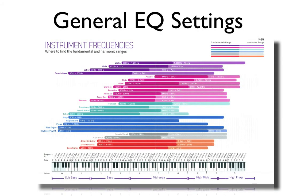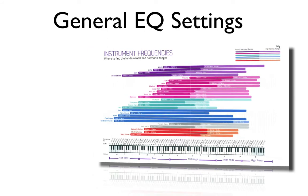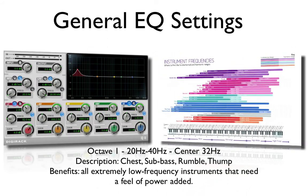Let's go over some general EQ settings. This is solely going to be a reference point and not a guide for every single mix. Octave 1: 20 hertz through 40 hertz, center point of 32 hertz. This gives you a chest thump, a sub-bass, rumble, or thump — an extremely low frequency. This is great for extremely low frequency instruments like kick drums, bass, organs, and things that need a little bit more feel and power added.